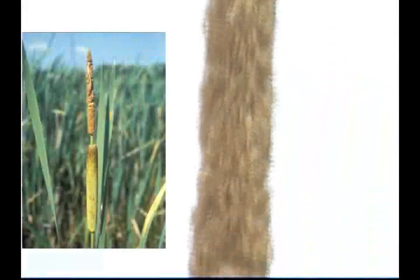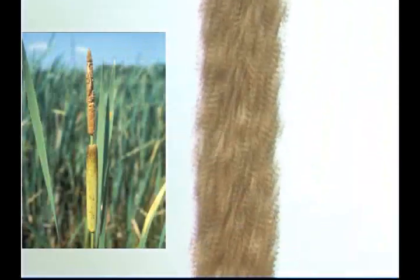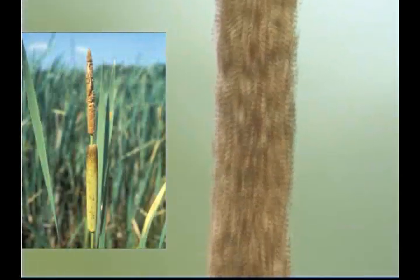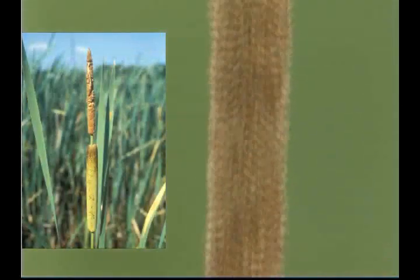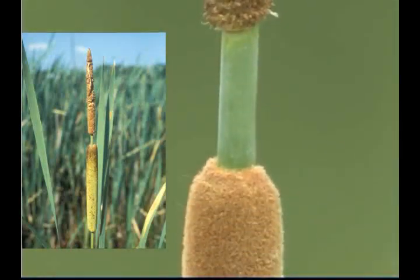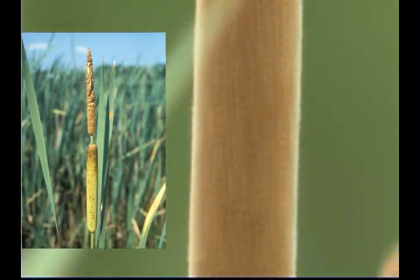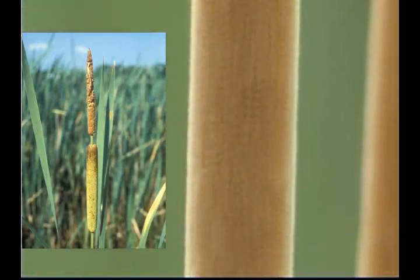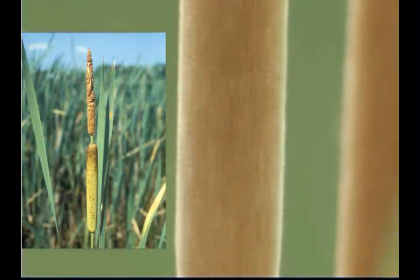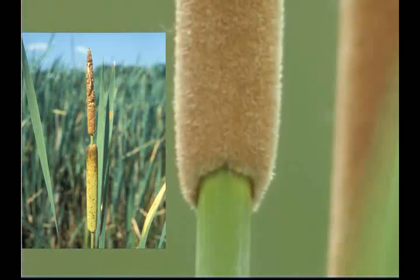The male flowers are comprised of stamens, the female of pistils. The fruit is a minute achene with a long hairy stalk.